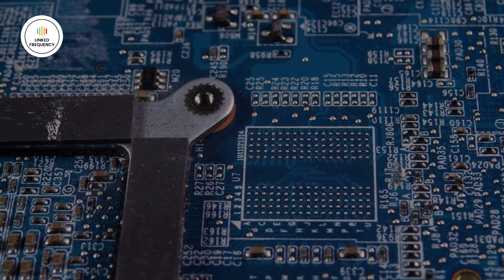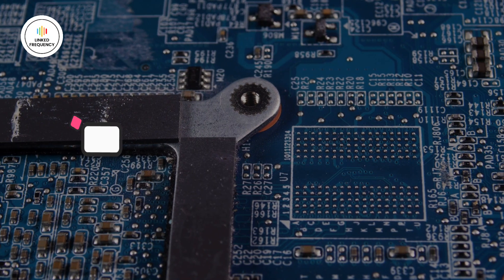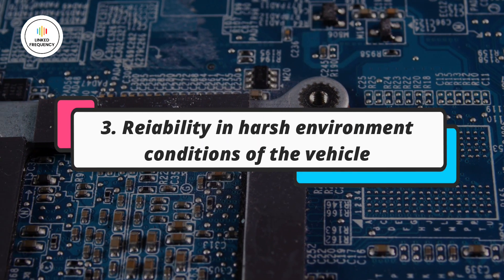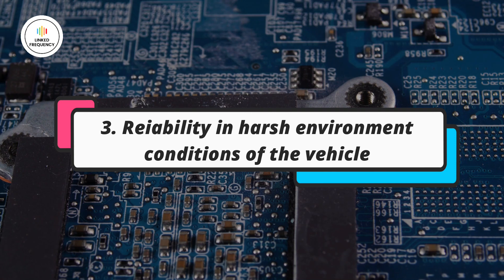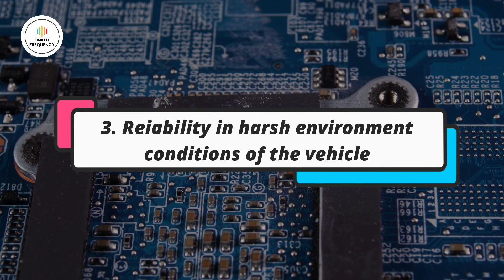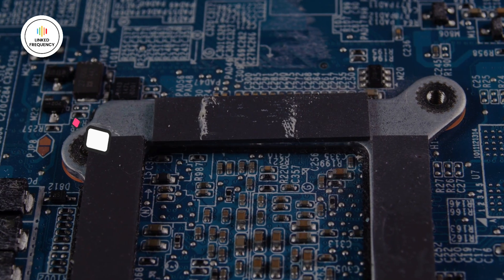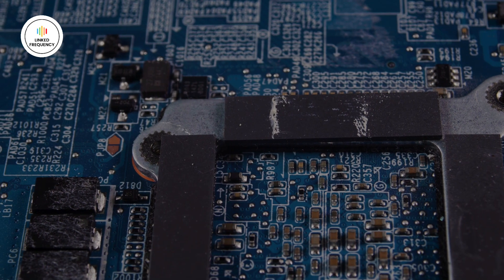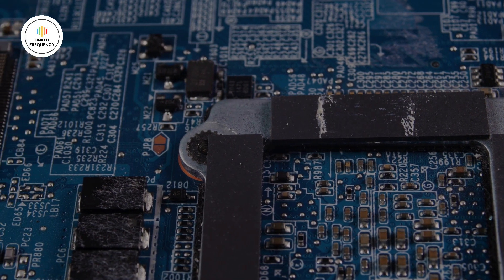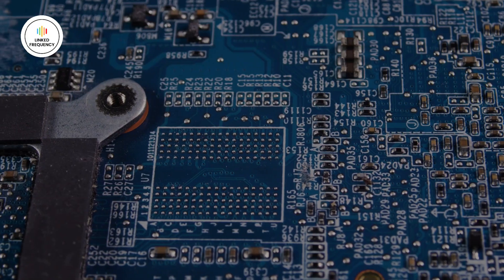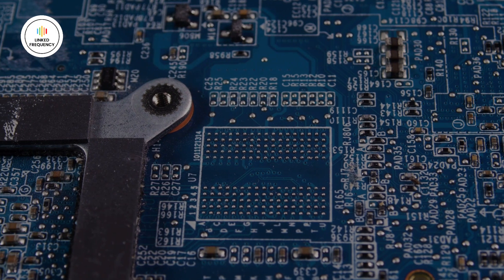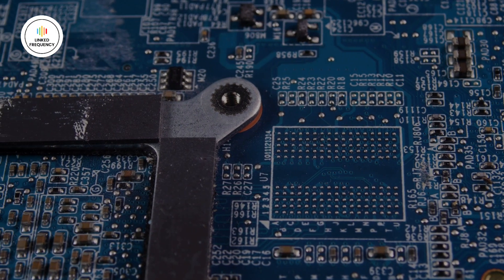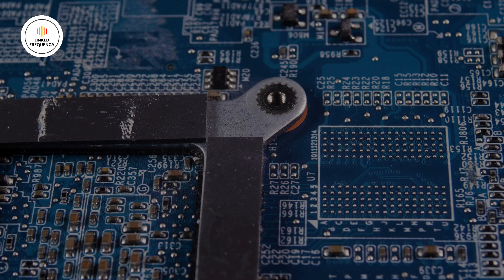Moving on to the next point: reliability in harsh environments. Automotive environments can be challenging, with factors such as electrical noise, vibrations, temperature variations, and electromagnetic interference. The CAN protocol was designed to provide reliable communication in these harsh conditions by using differential signaling, which minimizes the impact of noise and interference.